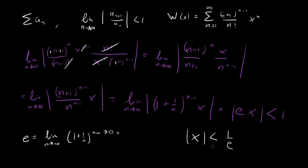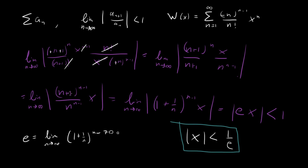So to summarize: we found a series representation for the Lambert W function using the Lagrangian inversion theorem, and then used the ratio test to show that the series is valid for |x| < 1/e, giving a radius of convergence of 1/e. I'll stop here — I hope to see you in the next video.